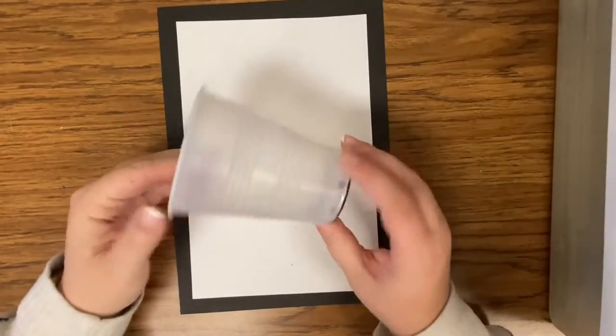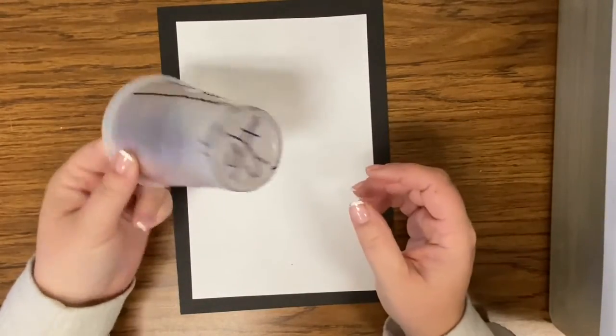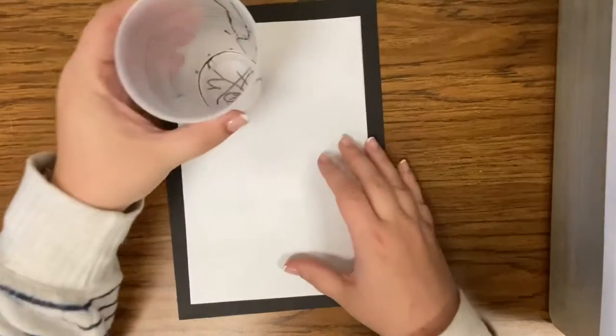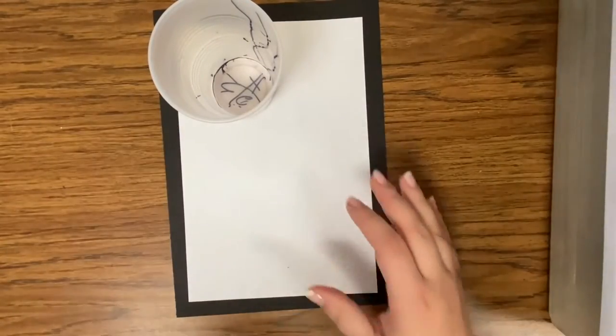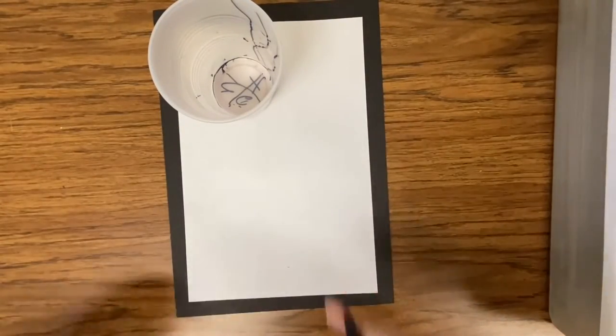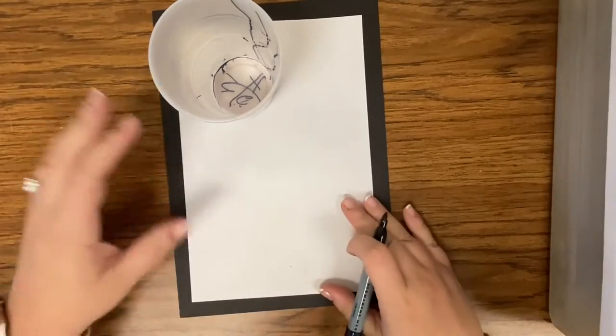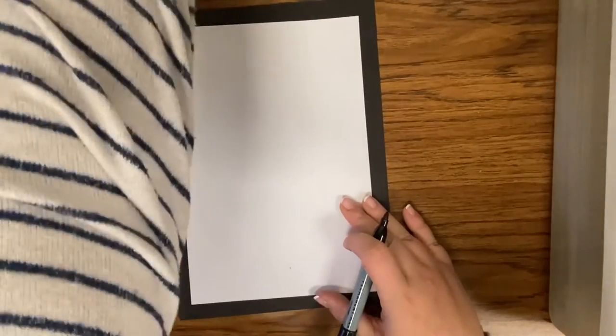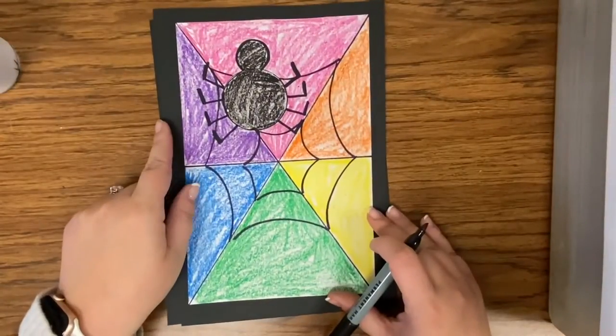You can do this one of two ways. I have cups, you can see are already pretty marked up that you can use, or you can just go ahead and freehand a circle. But we're going to start by making that spider that lives in the top left of our web.